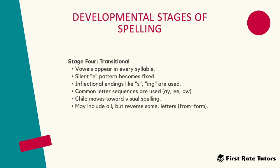In the fourth stage, the transitional stage, vowels appear in every syllable and the silent E pattern becomes fixed. Children use inflectional endings like S or ING, and common letter sequences such as A, E and O are used. Children move towards visual spelling and may include vowels, but sometimes reverse some letters.